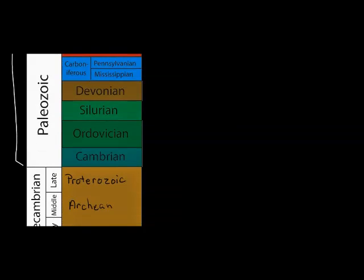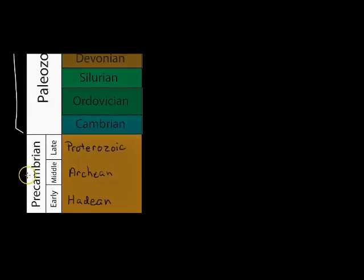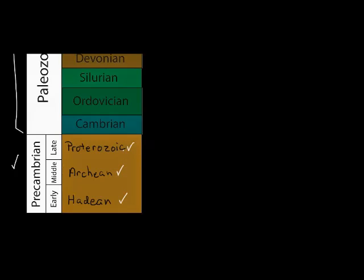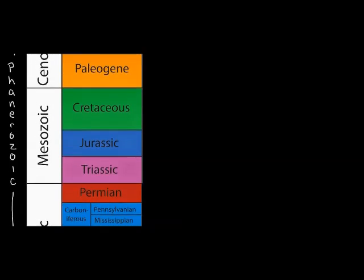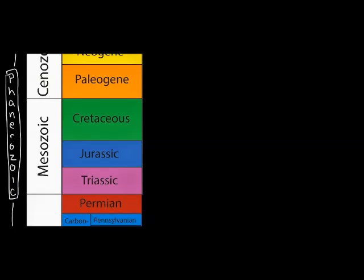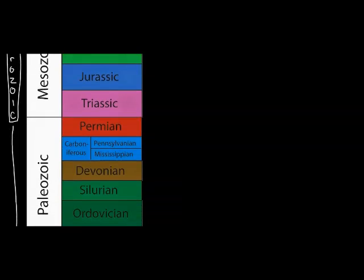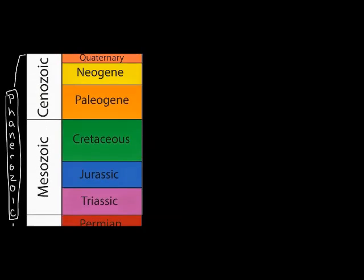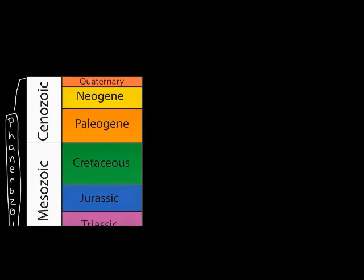In the last video we spoke about the Precambrian section of the geologic time scale, which comprised three different eons: the Hadean, the Archean, and the Proterozoic. In this video we're going to be talking about the fourth and final eon, the Phanerozoic. Within the Phanerozoic lie the three most important eras: the Paleozoic, the Mesozoic, and the Cenozoic — the era we are currently in.